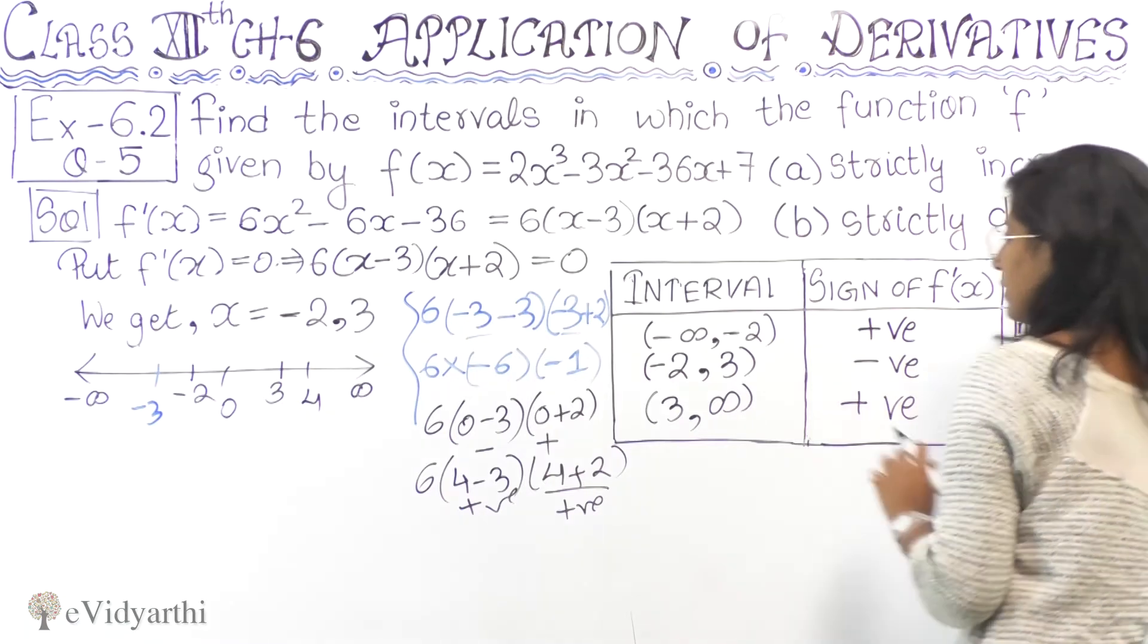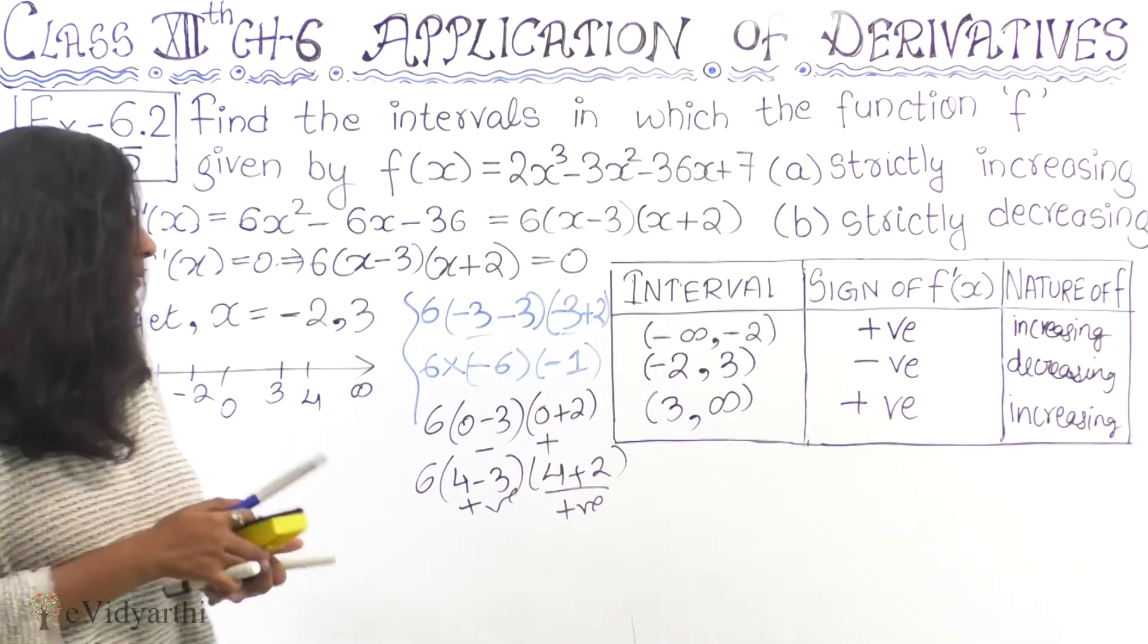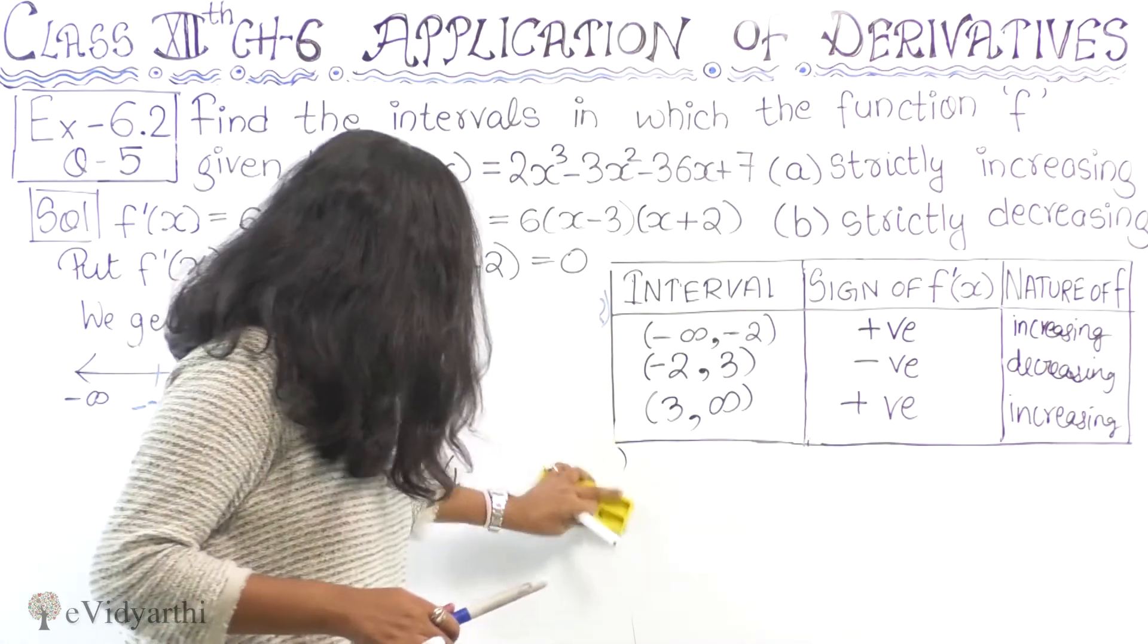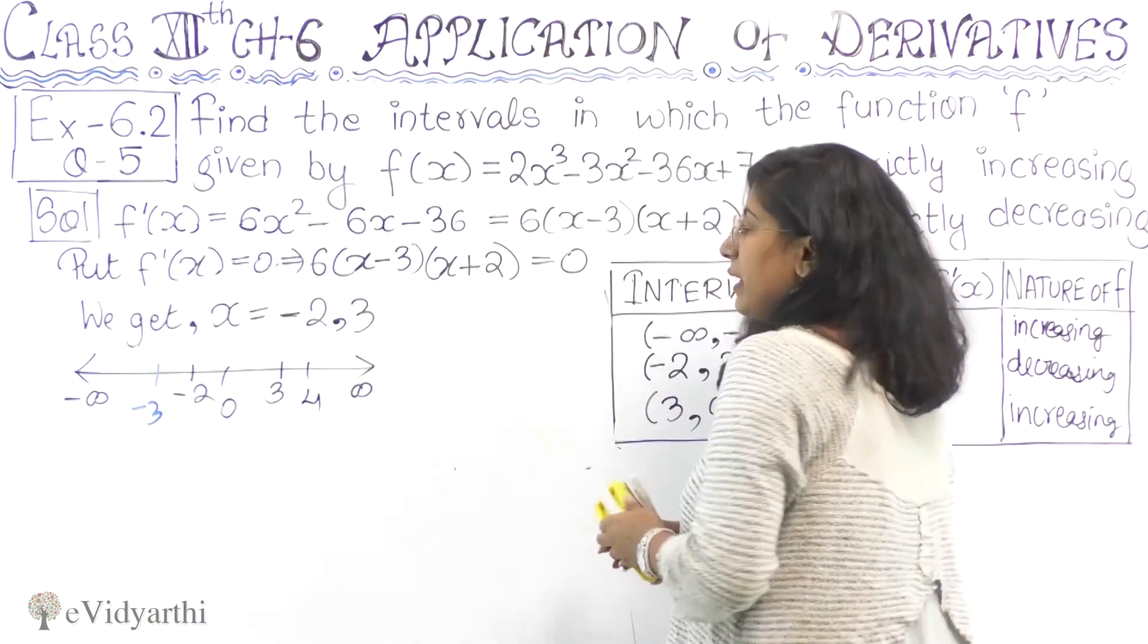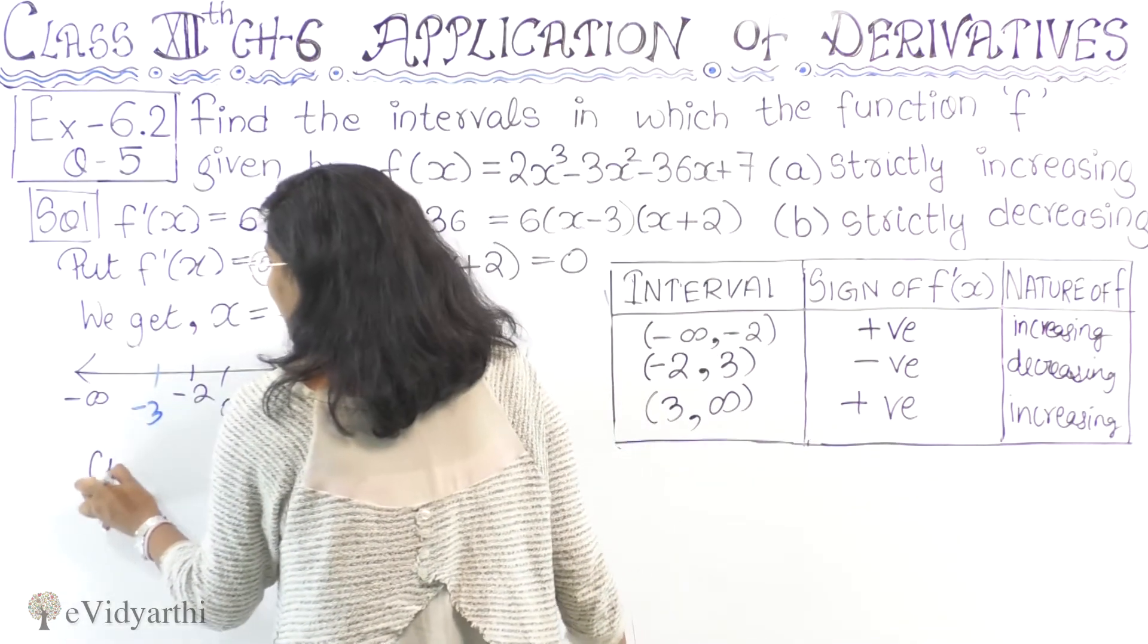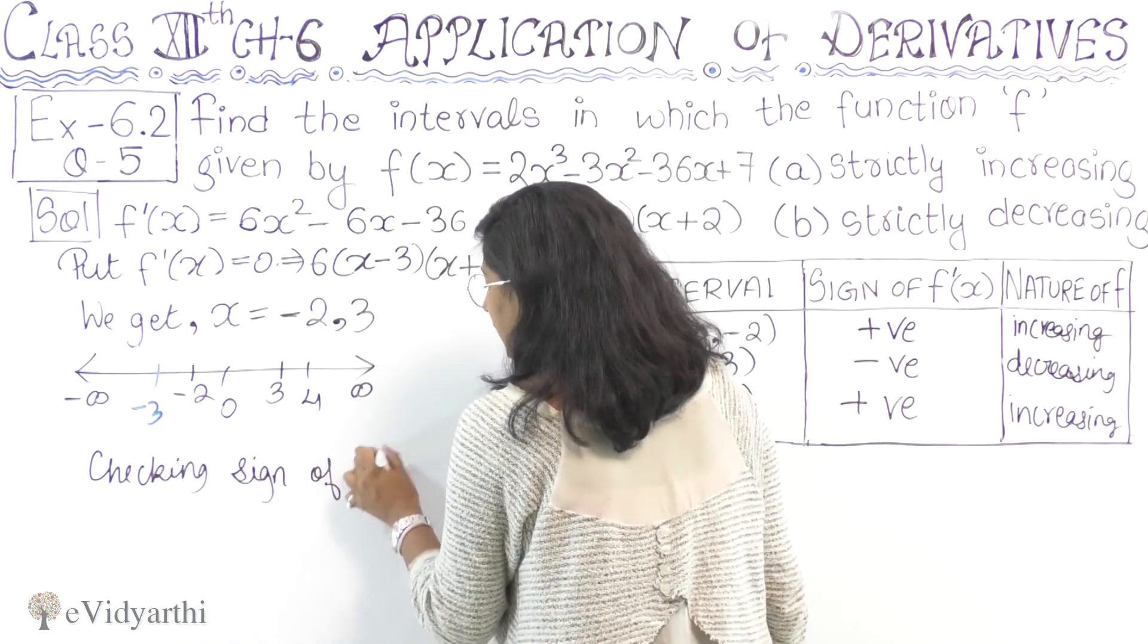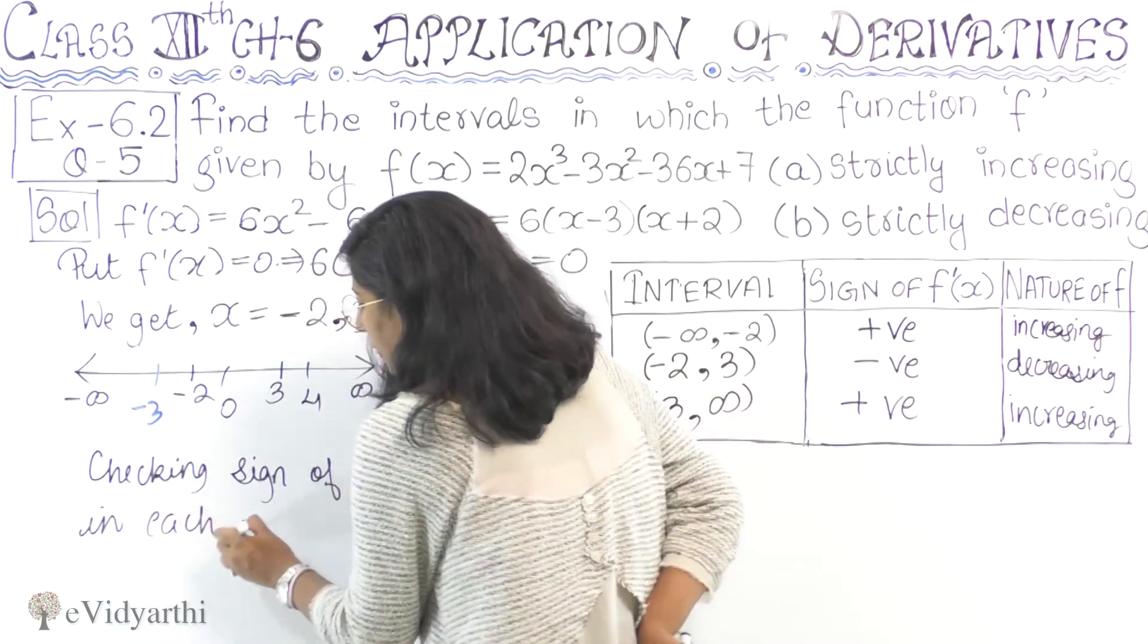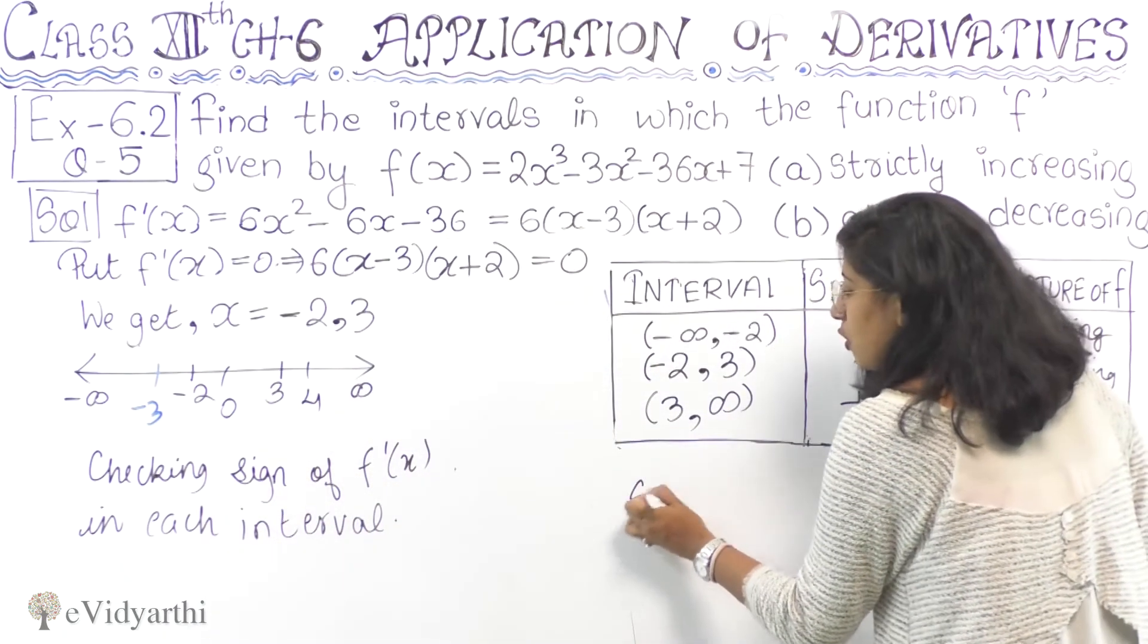So we have completed the table checking signs of f'(x) in each interval. Now let's write the answers for parts (a) and (b).